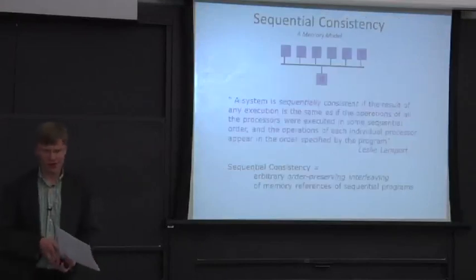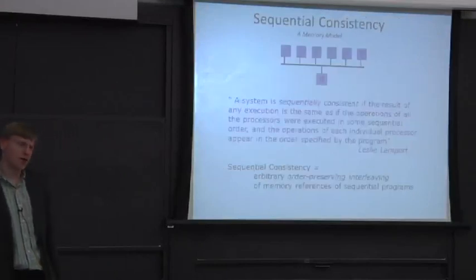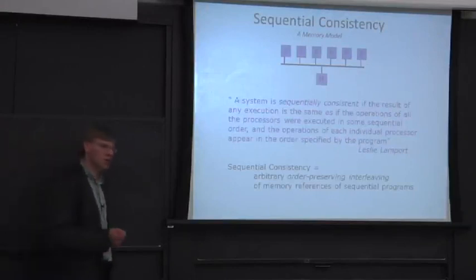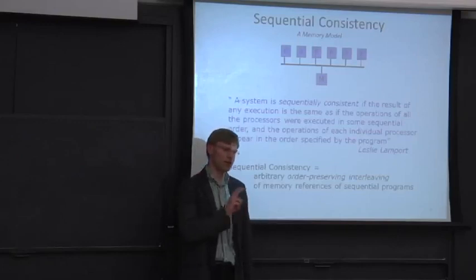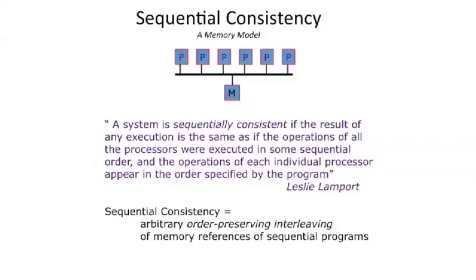Let's introduce a model and some semantics to describe ordering of memory operations between different processors. One of the most common ones is called sequential consistency. It's by no means the only one out there. This is a very strong ordering compared to any of the processors you run on your computers today — this is extremely strong. None of your computers actually implement this strong of an ordering.